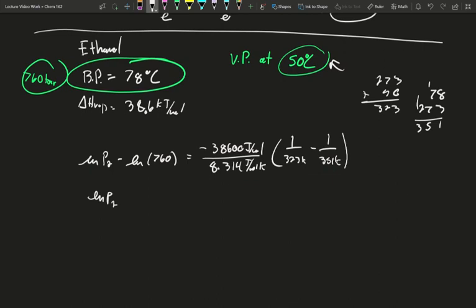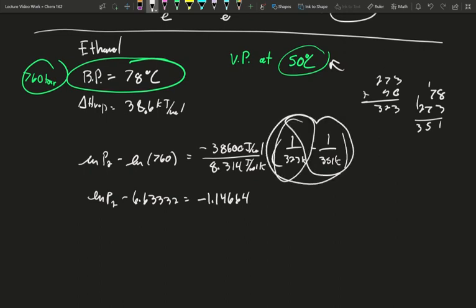My natural log of pressure 2 minus 6.63332 is equal to negative 1.14664. This time I have a larger value minus a smaller, so this will stay positive times the negative will be negative. So this looks good. I'm going to plus 6.63332 to both sides.